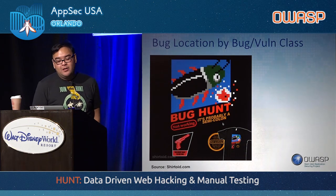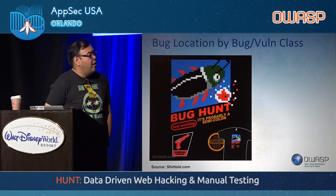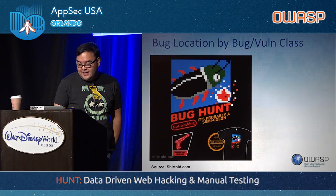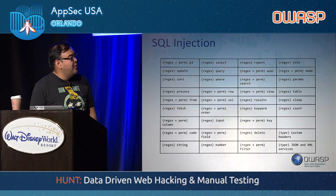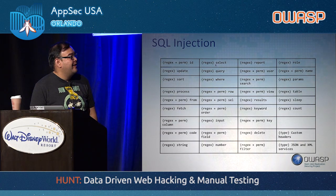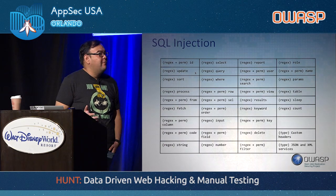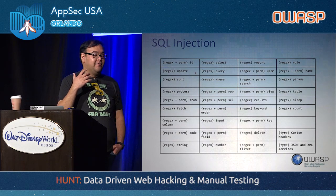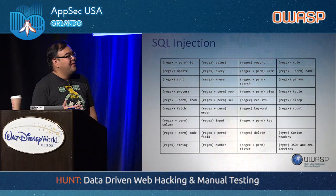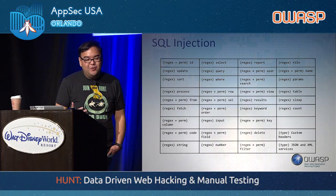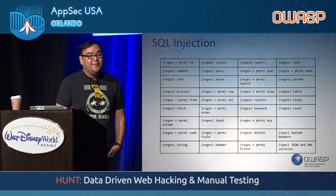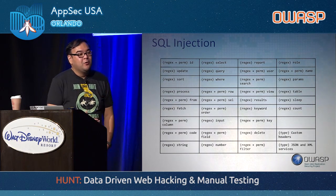Let's talk about bug location by bug and vulnerability class. We have the dataset broken down by vulnerability class and the different parameters. For SQL injection, a lot of what we saw in our dataset was that a lot of the parameters were 'id', 'select', 'query', 'update' — grammar that was indicative of talking to a database. It looks obvious when you see this slide, but it's hard for a new pen tester to actually know that off the bat without having all of that knowledge ahead of time. That's what we're trying to solve here.